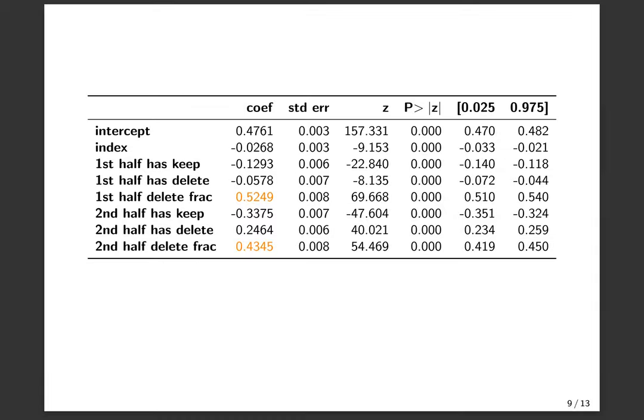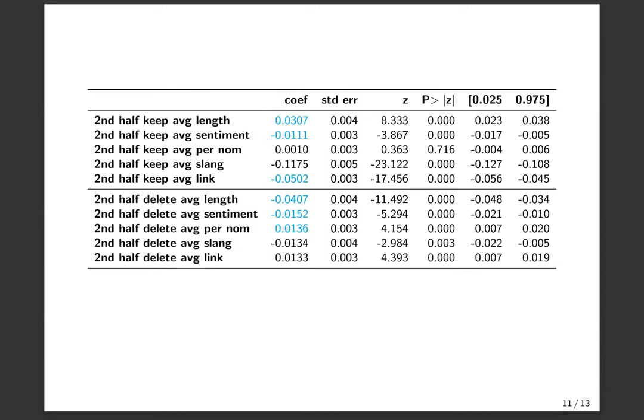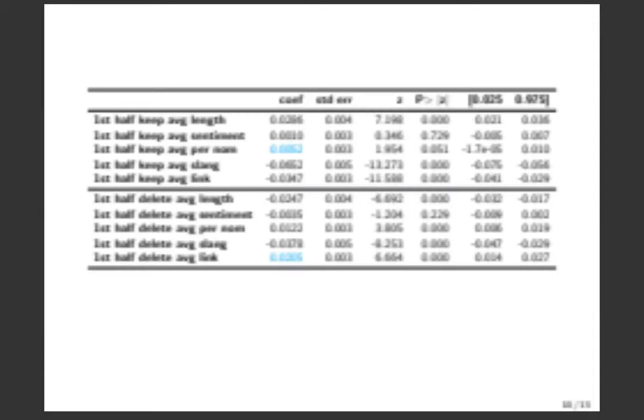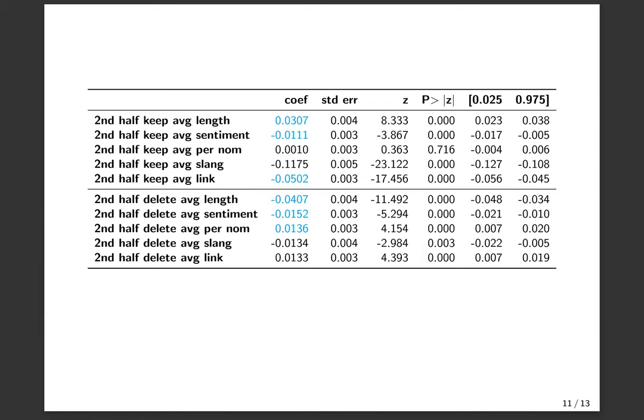And here are the results, and I don't want to bore you with too many numbers, so let me just highlight the main points. A particularly interesting large-scale pattern we see is that textual features tend to have more extreme coefficients in the second half, and especially in keep votes. So for example, the usage of pernom is stronger in the second half than it is in the first half, and a lot of other textual features share that characteristic.